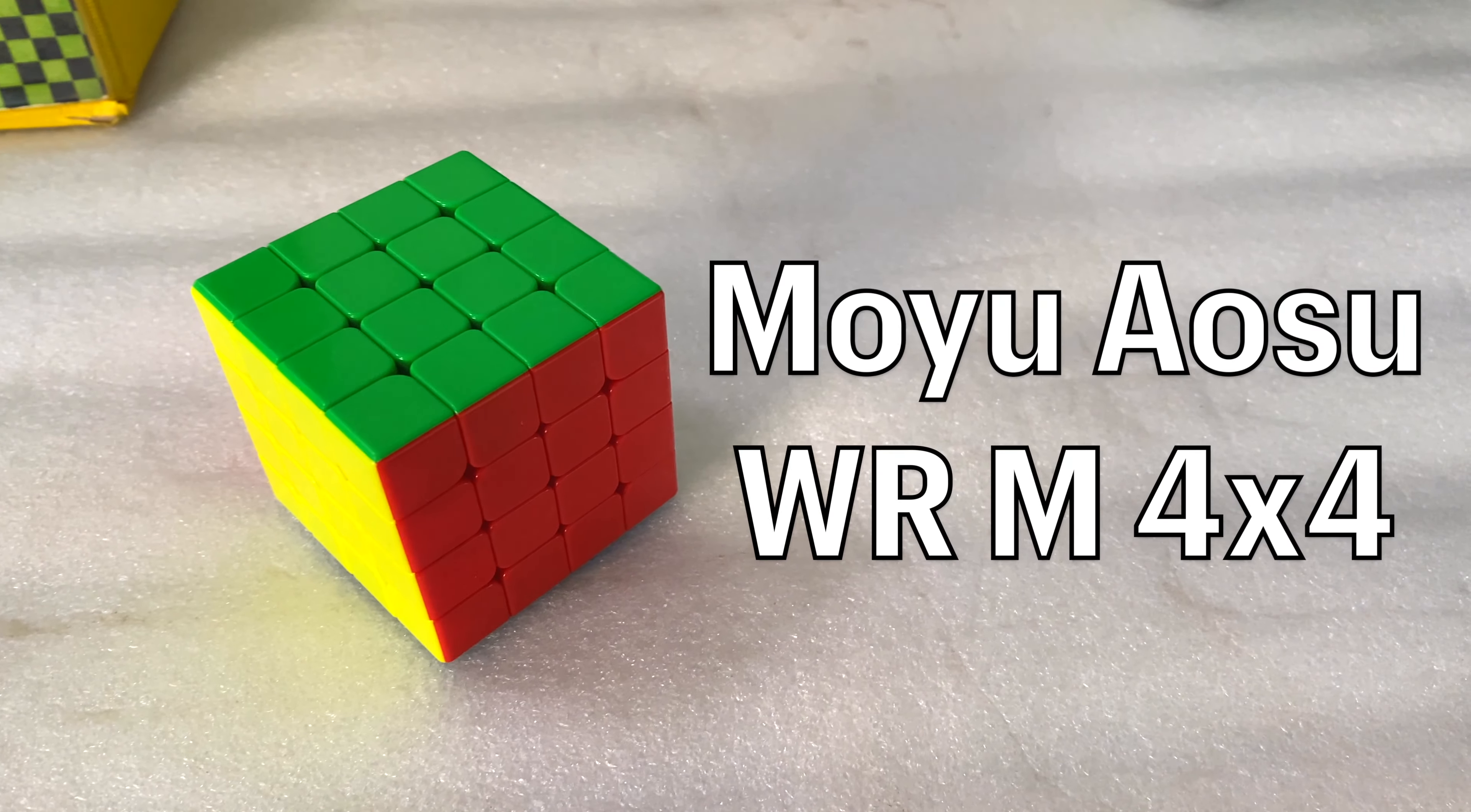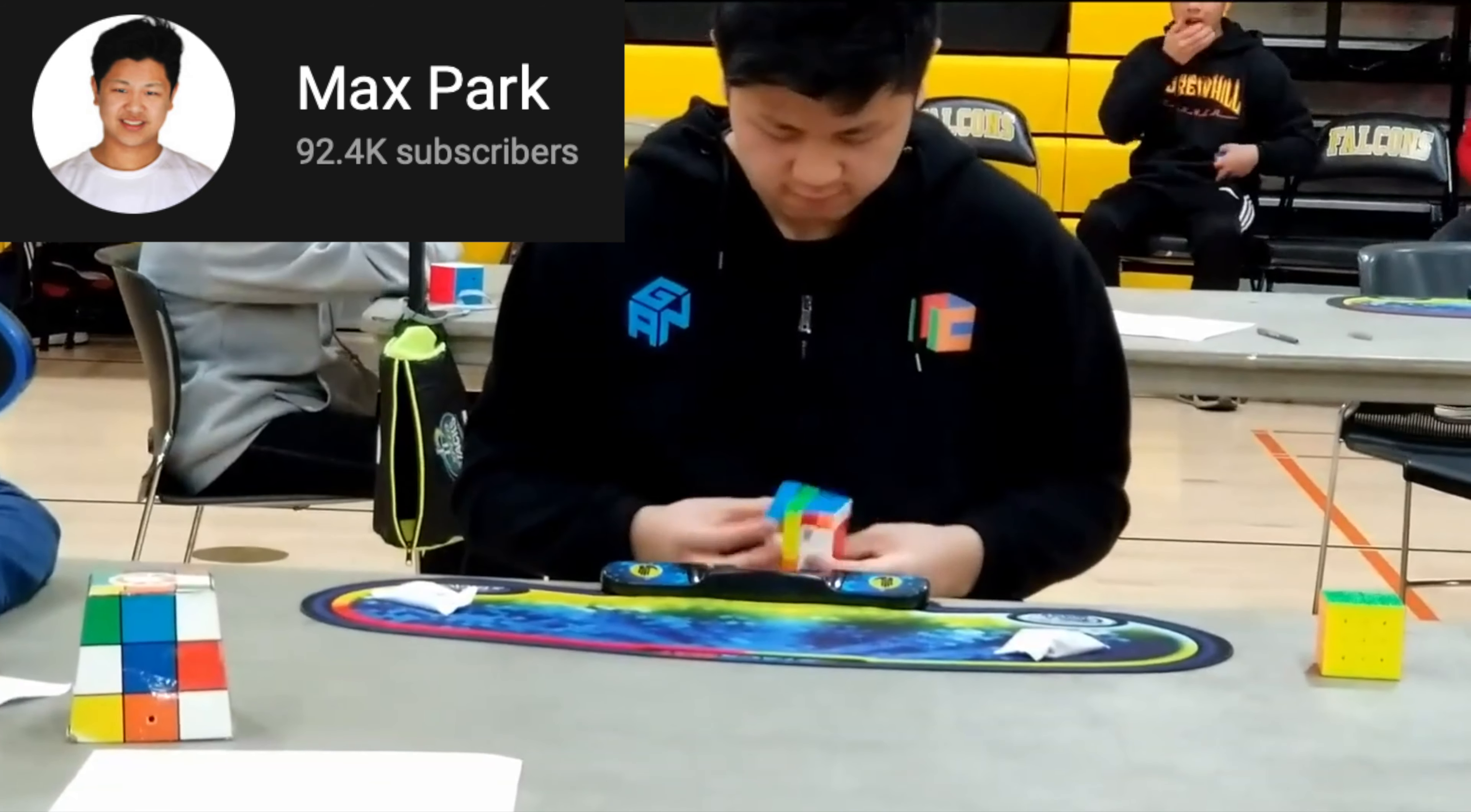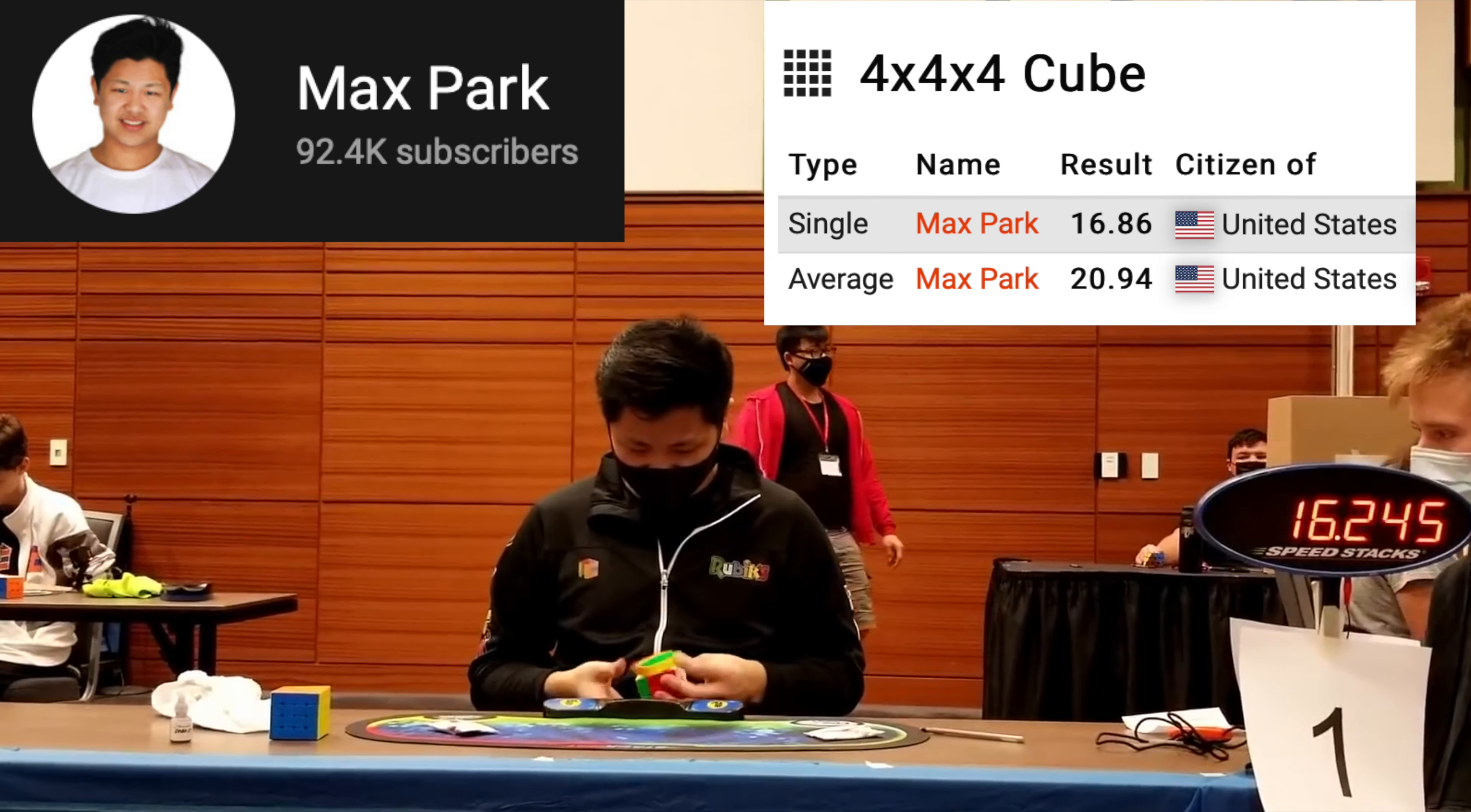This cube right here is the Moyu Aosu WRM 4x4. Upon its release back in August 2019, it was a very well-received cube and Max Park immediately switched to it and got a world record. As of today, this cube holds both the 4x4 world records by Max Park.